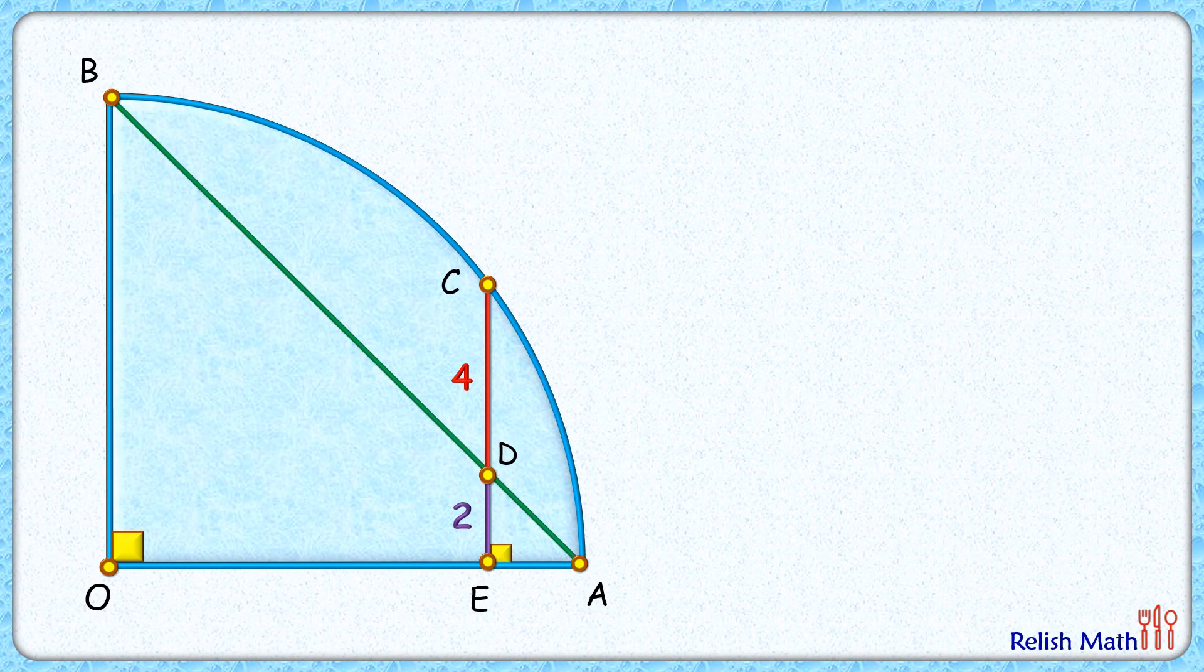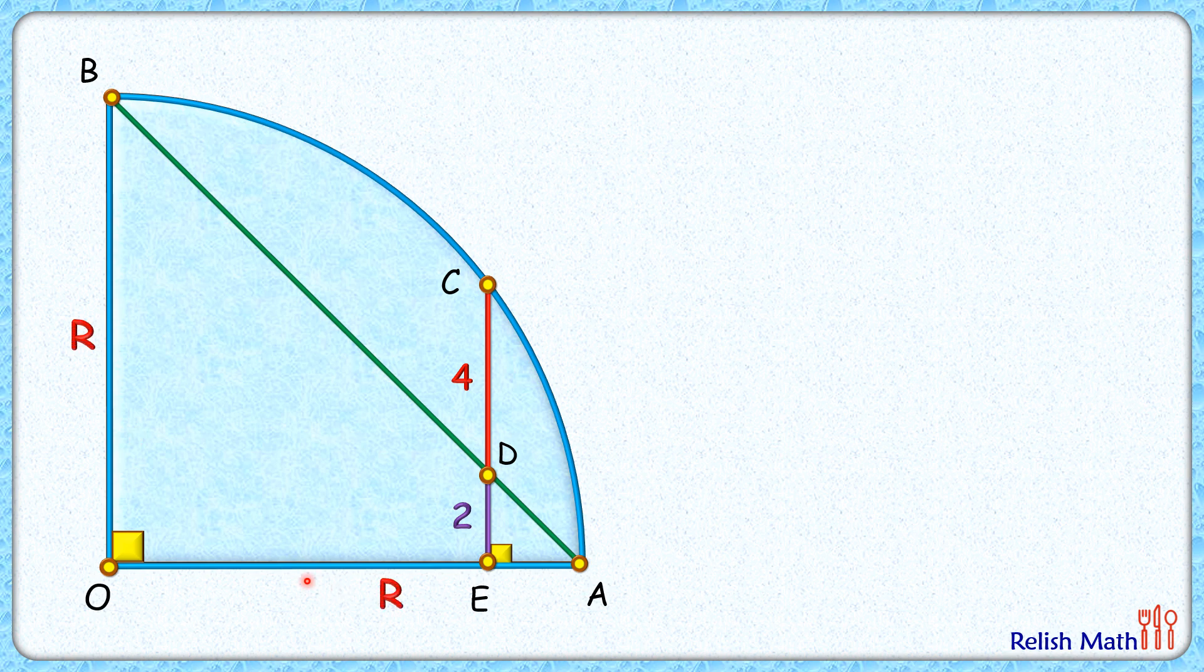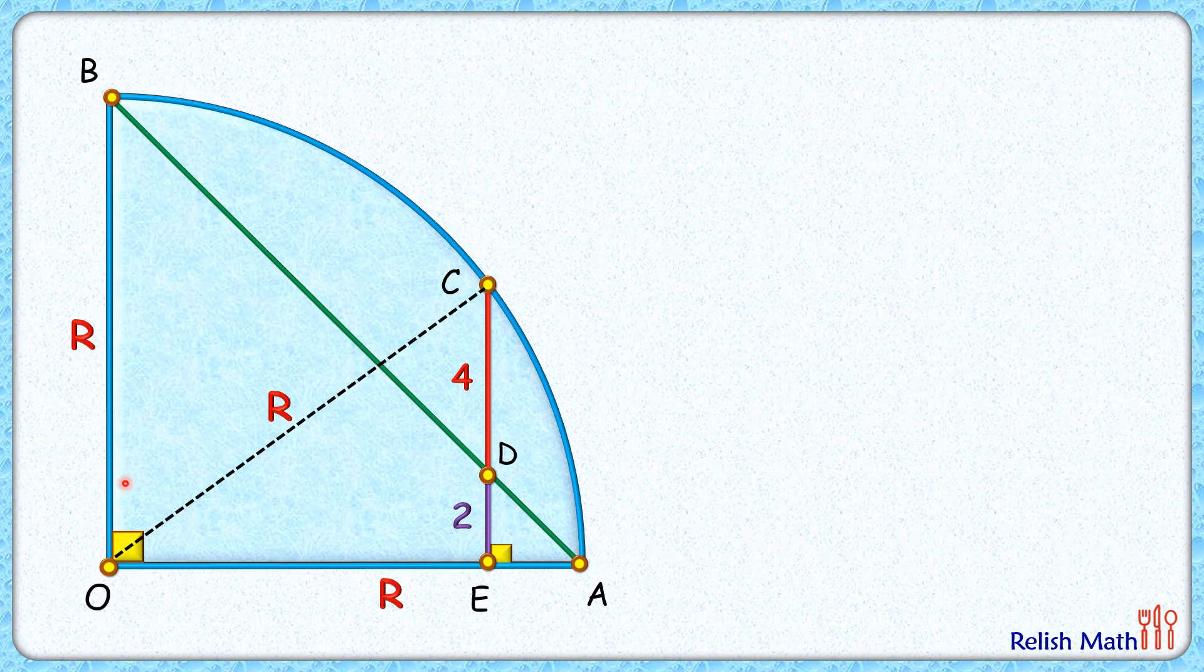Let's check this simple and short solution. Let's assume the radius of this quadrant is r centimeters. Thus OC length, that will also be r centimeters. Now in triangle BOA, it's an isosceles triangle.